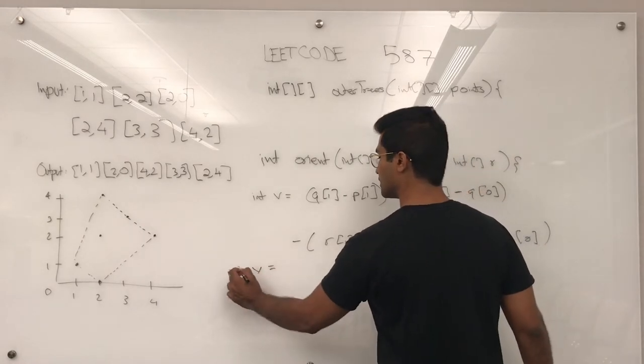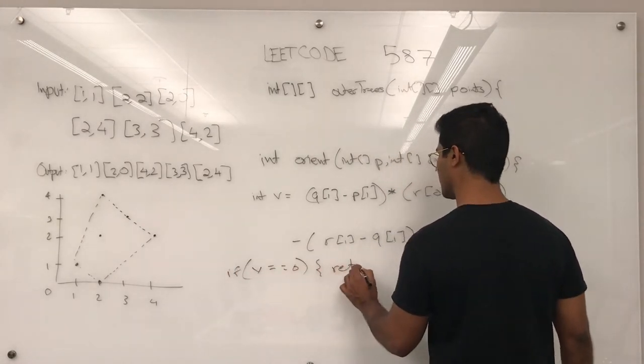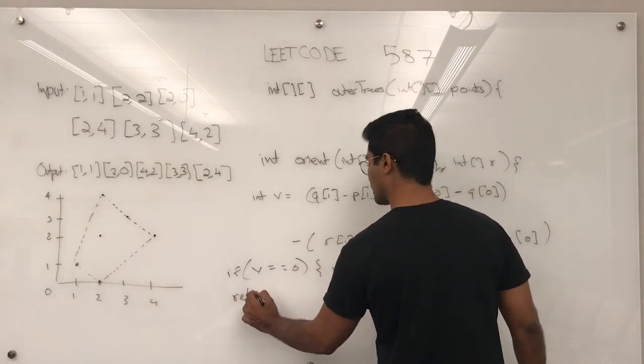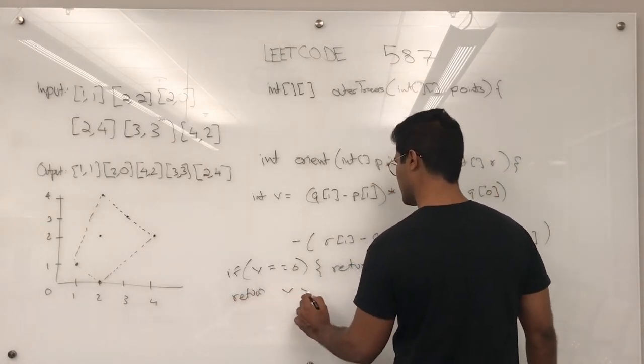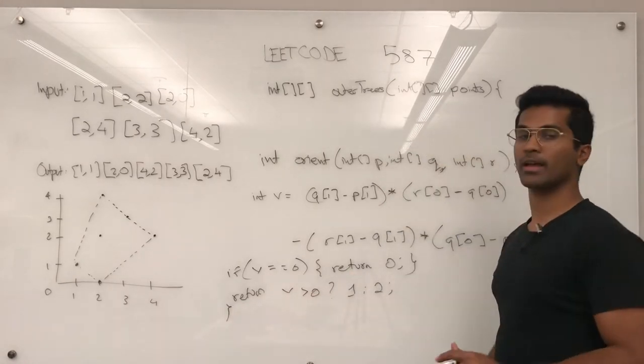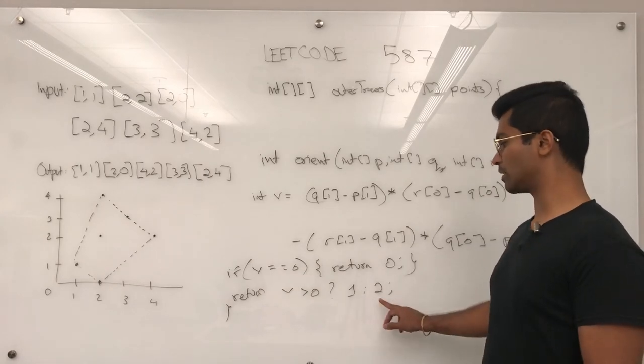So if v is equal to 0, then return 0. Else, what we're going to do is return v is greater than 0, 1 and 2. So what 1 and 2 signify is being clockwise or anti-clockwise.